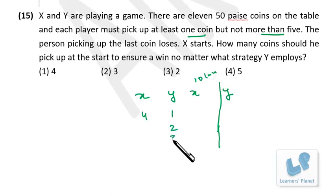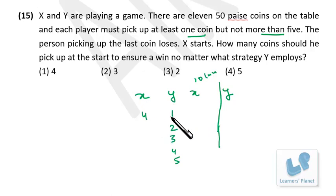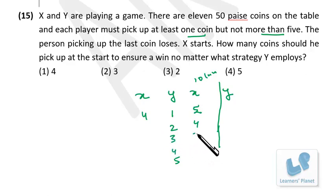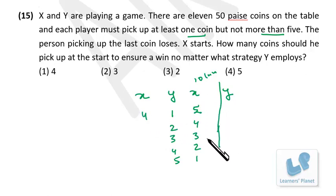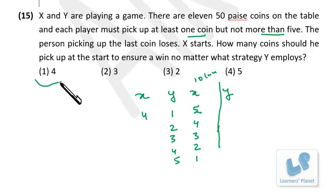If X picks 4 initially, then whatever Y picks (1–5), X can pick to make the combined total 6. So: Y picks 1 → X picks 5 (total 10); Y picks 2 → X picks 4; Y picks 3 → X picks 3; Y picks 4 → X picks 2; Y picks 5 → X picks 1. In every case, after X's second turn 10 coins are gone, leaving the 11th for Y — Y loses. So X should pick 4.